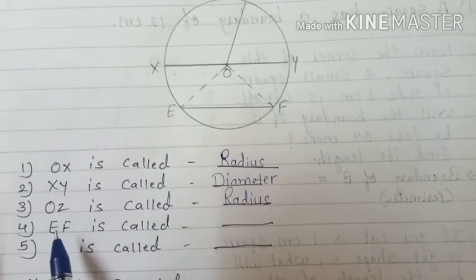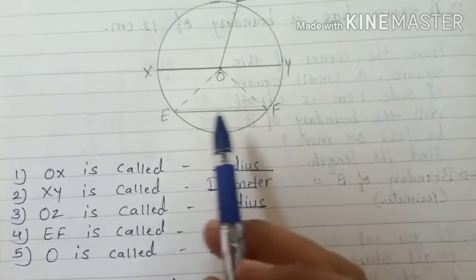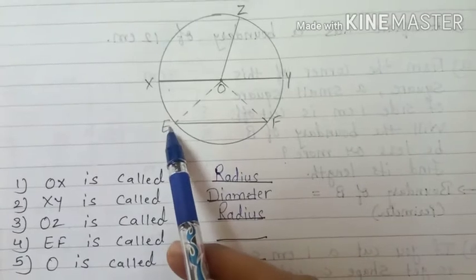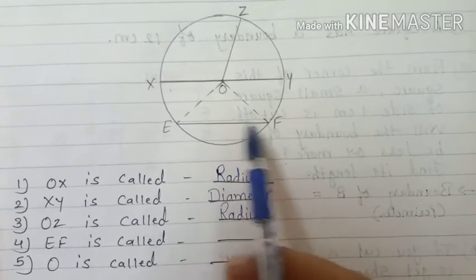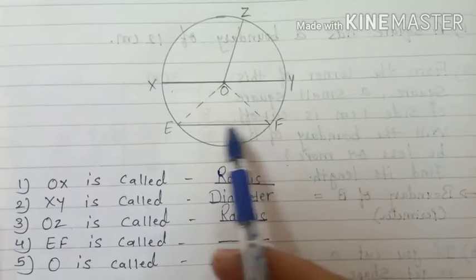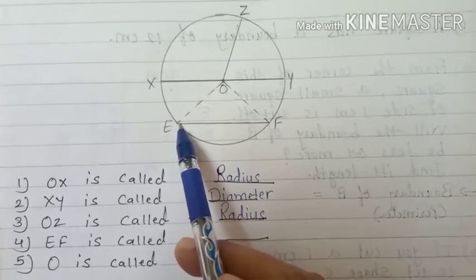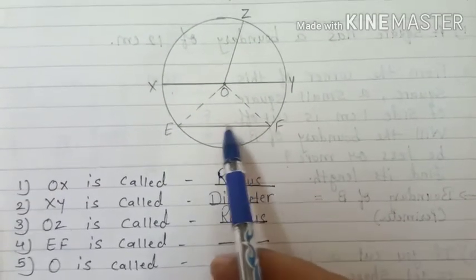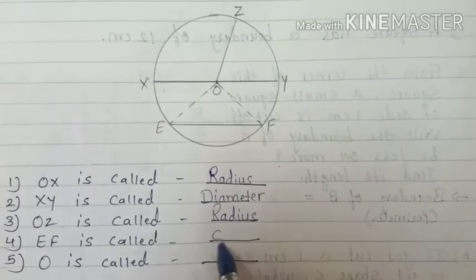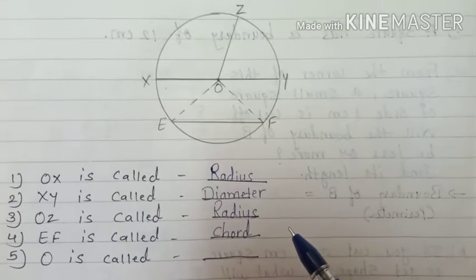Next question: EF is called dash. What is EF? It is a line segment which touches the circle at two points. EF is the chord. So what will we write for EF? C-H-O-R-D - chord.